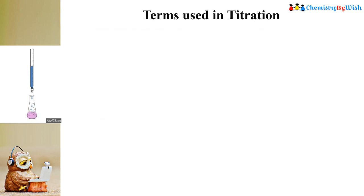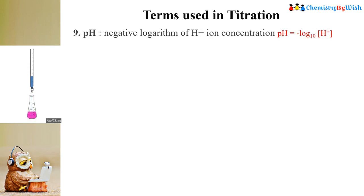The next term used in titration is pH. The general definition of pH is the negative logarithm of H+ ion concentration. So pH = −log₁₀[H⁺]. pH indicates acid strength — it is a measure of how acidic a solution is.